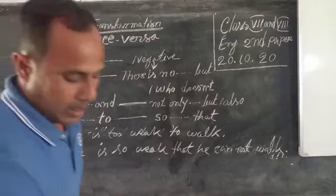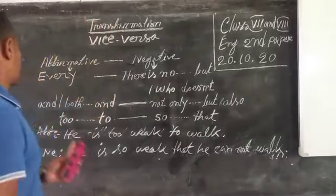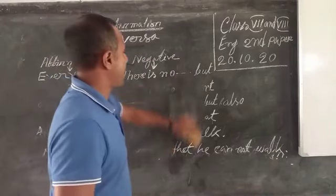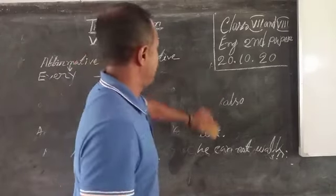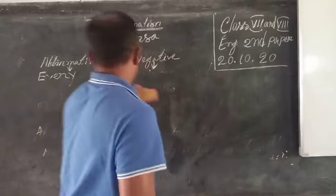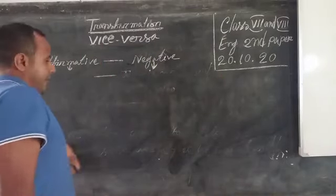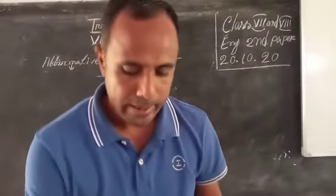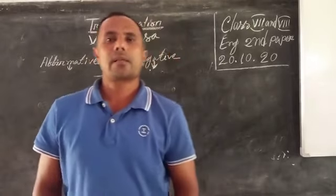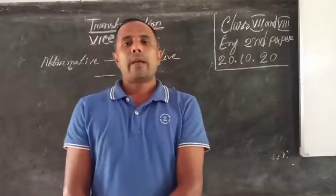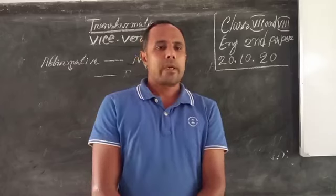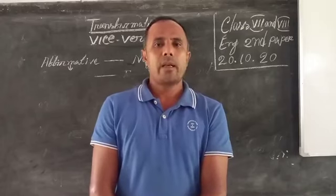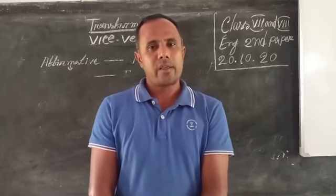So I have already discussed three rules of affirmative to negative: 'there is no', 'both...and' to 'not only...but also', and 'too...to' to 'so...that'. There are some more rules that I may come tomorrow to cover. Till then, you will be good and healthy. Allah, thank you for staying with me.